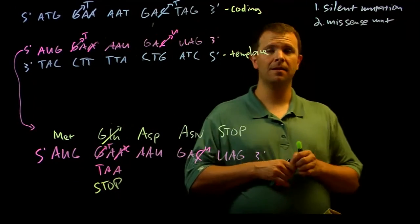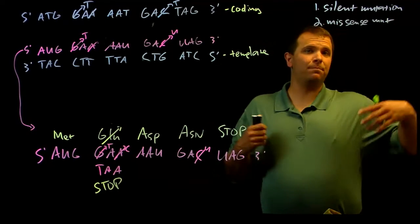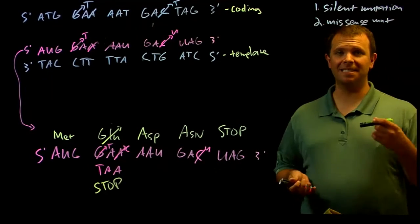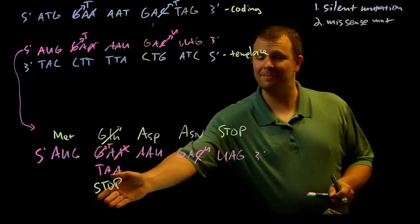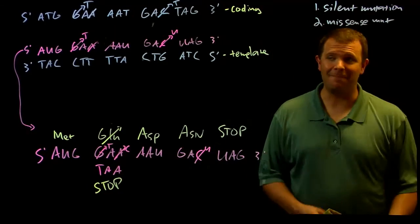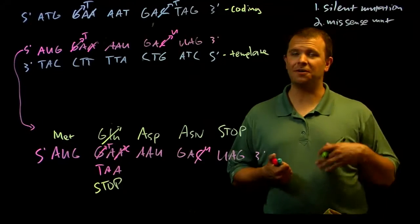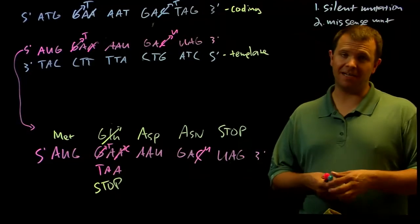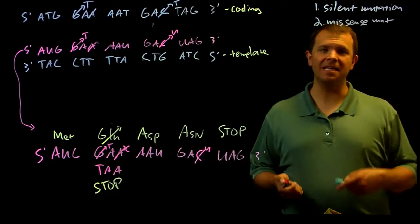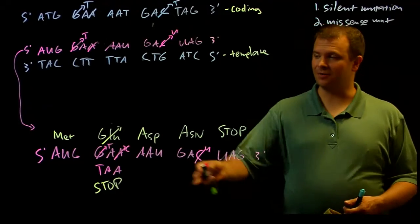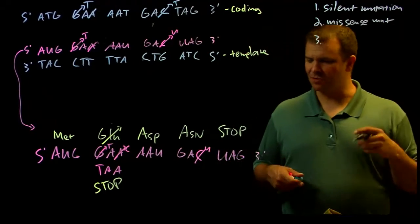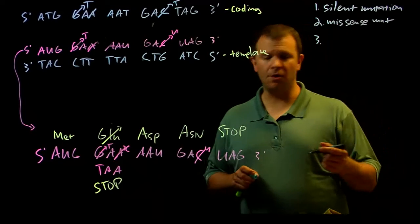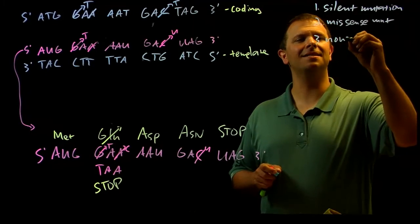And so a stop codon is particularly deleterious to a protein coding gene because when the ribosome gets here, it's going to stop, and anything after that new stop codon is not going to be translated. And we call this kind of mutation, this early stop codon, a nonsense mutation.